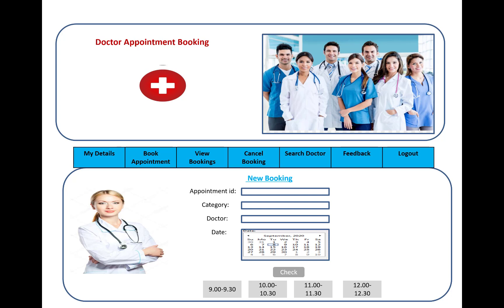In the new booking system, you will see that the appointment ID is automatically generated in ASP.NET Core. You then choose a category — the type of disease category — and the doctor, which depends on the category. For example, orthopedic doctors, heart-related doctors, or brain-related doctors. These doctor options are populated based on the selected category using cascading dropdowns.